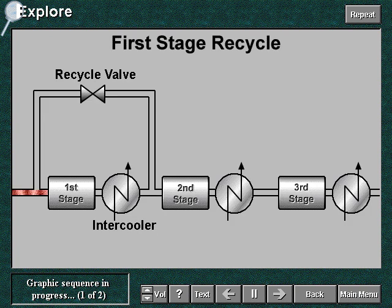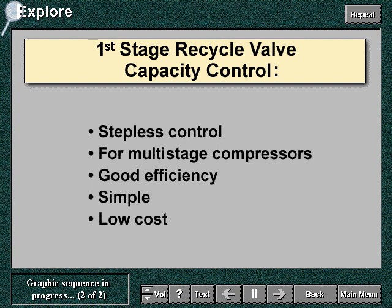Recycle controls capacity by recirculating a portion of the gas from the first stage delivery back to its suction. This system is suitable for multi-stage compressors and works by reducing with the recycle the quantity of gas that is sent to the second stage and beyond. The gas amount recycled around the first stage can be varied continuously. The system therefore is a continuous type control. The first stage handles 100% of the gas under capacity control, but the following stages handle only the reduced flow rate. Therefore, the efficiency of the system is good and increases with the number of stages. First stage recycle is simple and of low cost.